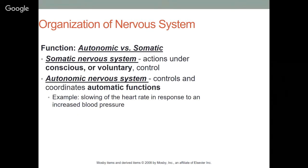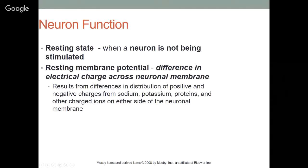The somatic nervous system controls actions under conscious or voluntary control — you control your body. The autonomic nervous system controls and coordinates automatic functions, such as slowing of the heart rate in response to increased blood pressure — you don't necessarily control that. It's an automatic thing that happens within your body to maintain homeostasis.